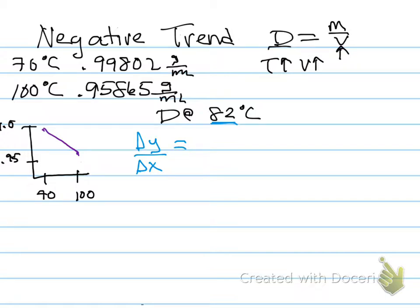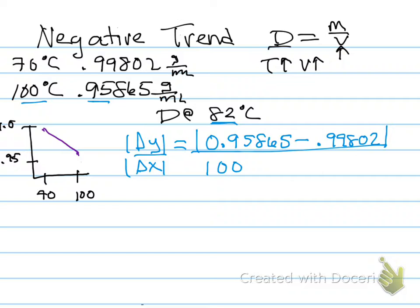So my Y values here are going to be, I'm going to do the absolute value of them because it's going to simplify my math. You don't have to. If you want to keep it as a negative slope, you can. But I think most people will probably think in positive numbers a little bit more easily. So we're going to go the absolute value of .95865 minus .99802 divided by 100. So this 100 degrees and .95865 need to stay sort of together. This is the data point, so I want to make sure that they match up.